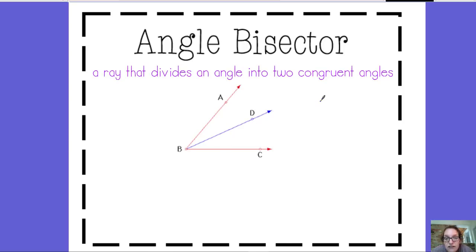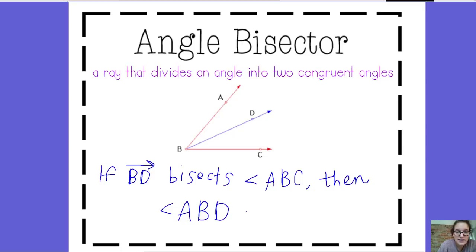A ray that divides an angle into two congruent angles. So what this is saying is if ray BD is indeed bisecting angle ABC, that means that angle ABD and angle DBC are going to be congruent. In your notebook, or in your little paper, write: if ray BD bisects angle ABC, then that means that angle ABD is going to be congruent to angle DBC.